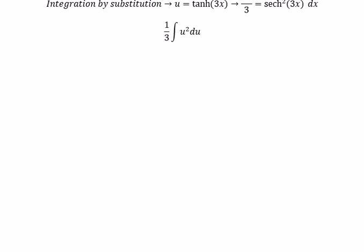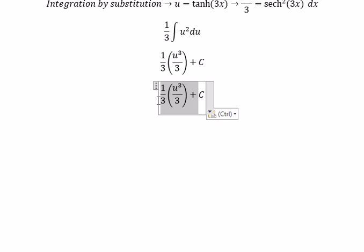The integral of u squared. You got 1 over 3 multiply with u to the power of 3 over 3. And this one you got u to the power of 3 over nine. Let's see about this one.